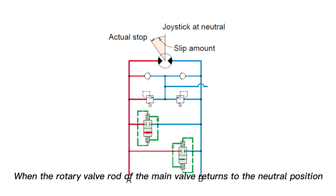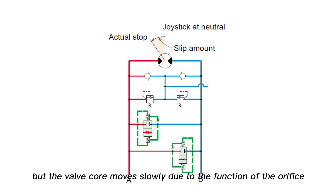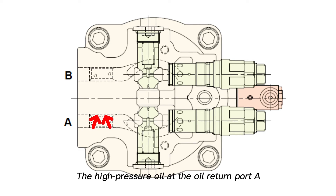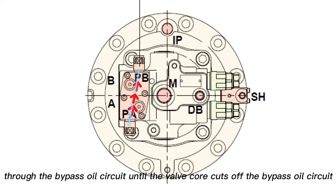When the rotary valve rod of the main valve returns to the neutral position, the high pressure oil at the oil return port A acts on the PA valve core and moves it toward PB. But the valve core moves slowly due to the function of the orifice, so that a bypass circuit is formed between the oil inlet port and the oil return port. The high pressure oil at the oil return port A then flows to the oil inlet port B through the bypass oil circuit.